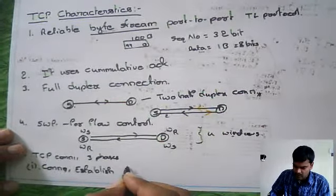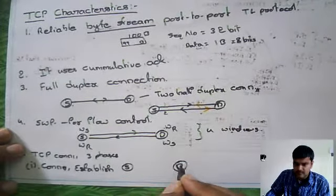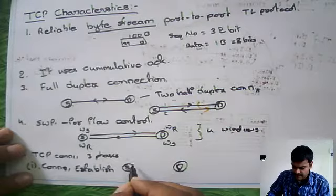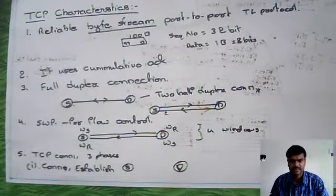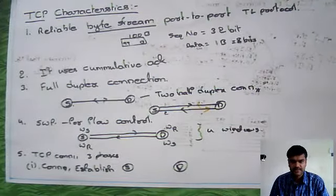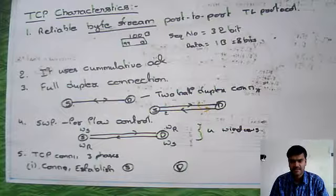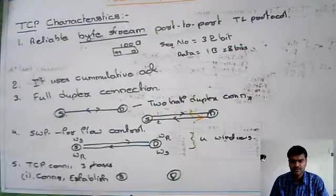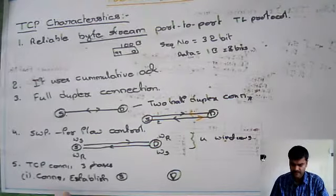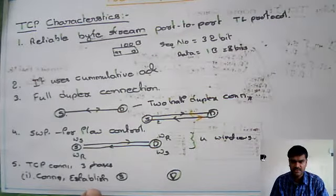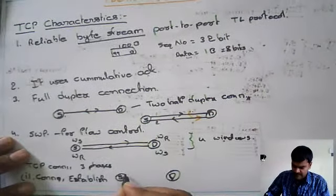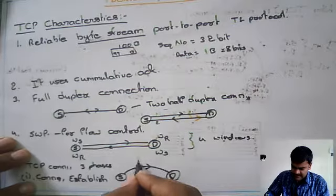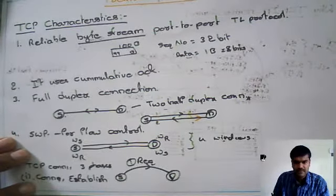In the Connection Establishment Phase, we have the source and destination. To transmit data, it is like a phone connection — to talk with another person, first you have to make the connection by dialing, then the connection is established between the two persons, you talk (transmit data), and after that you terminate. Similarly here, the connection establishment is done by a 3-way handshake. The first handshake: source will request the connection.